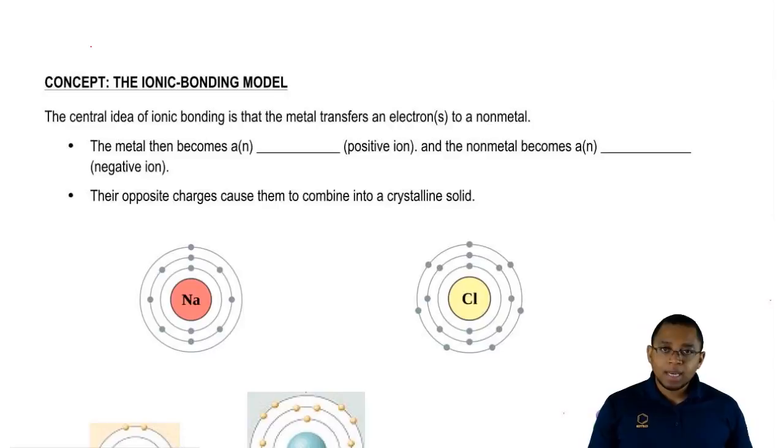We have the transferring of the electron from the metal to the nonmetal. The metal then becomes a positive ion which we call a cation, and the nonmetal becomes a negative ion which we call an anion.